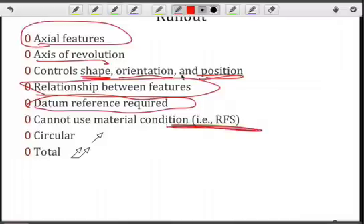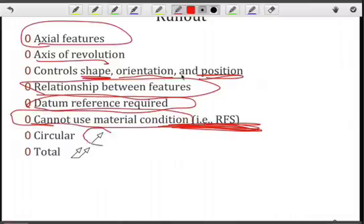Also note that any features of size are regardless of feature size, and therefore you cannot use material condition where you are using runout tolerances. Two types of tolerance zones: one is two-dimensional, which is indicated by the single vector. And the other is two vectors, which is three-dimensional, called total runout. And so you'll see some similarities between this and the line profile versus the surface profile.